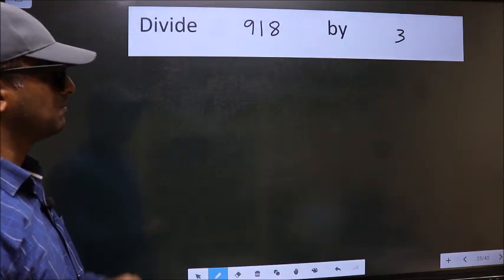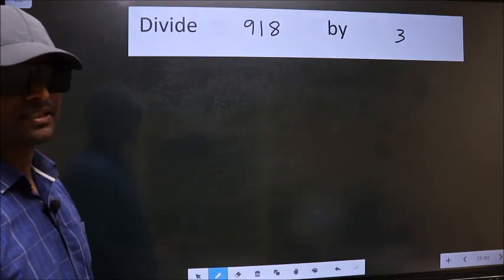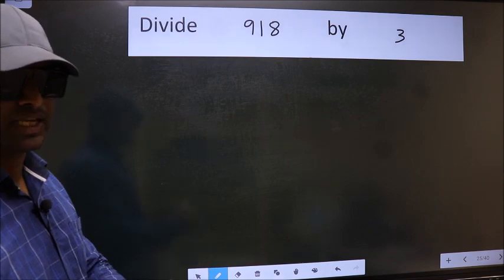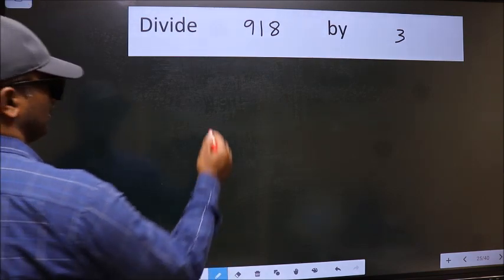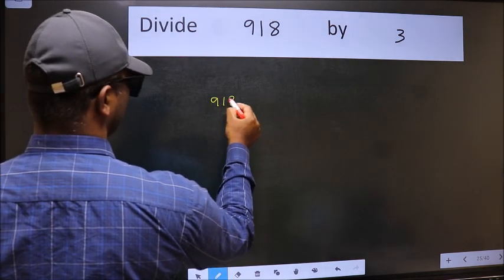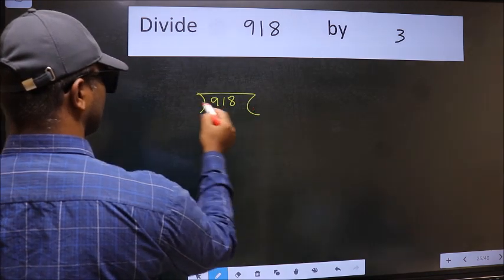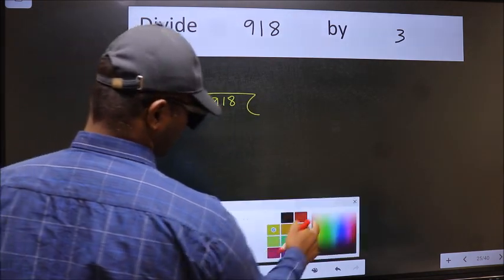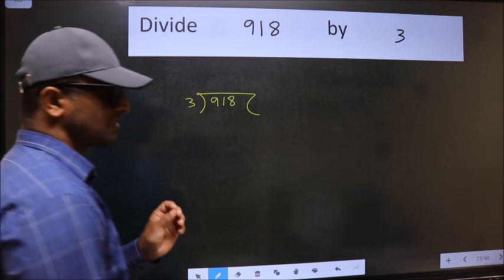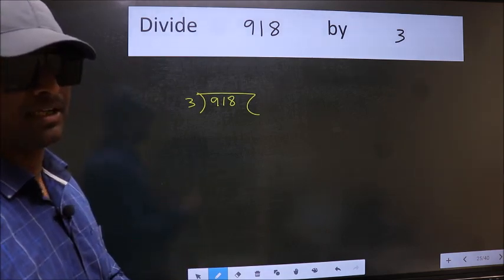Divide 918 by 3. To do this division, we should frame it in this way: 918 and 3 here. This is your step 1.